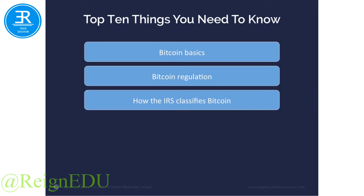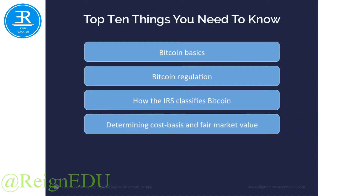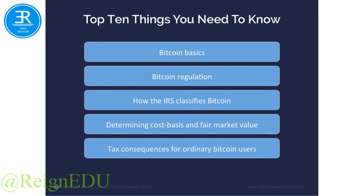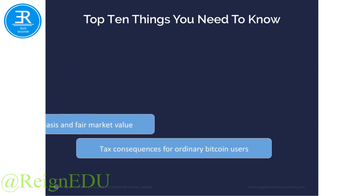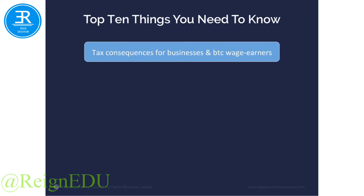How the IRS classifies Bitcoin: for tax purposes, the IRS considers Bitcoin to be property and not currency. We'll see that this has a number of implications for how Bitcoin and other digital currencies must be treated from a tax perspective, including determining cost basis and fair market value, potential tax consequences for ordinary Bitcoin users, and tax consequences for businesses and those receiving wages or payment in Bitcoin.